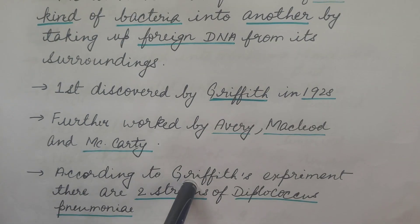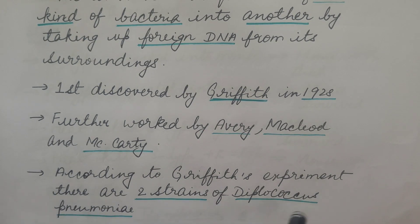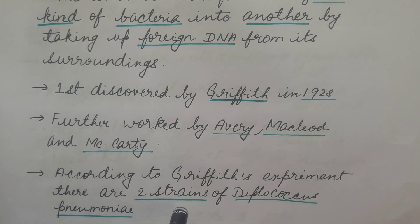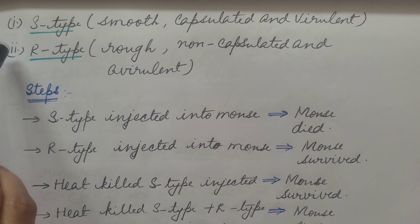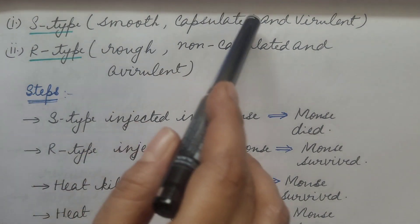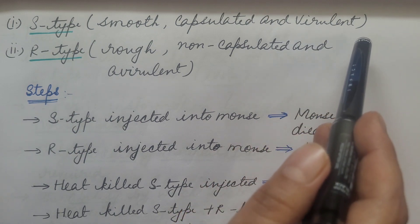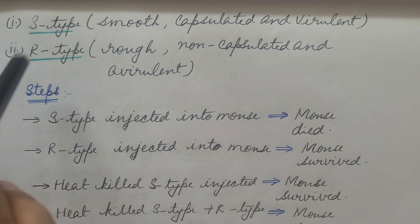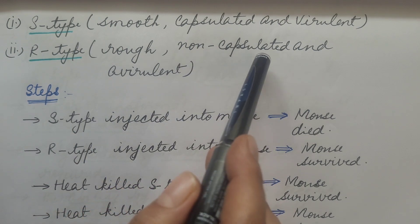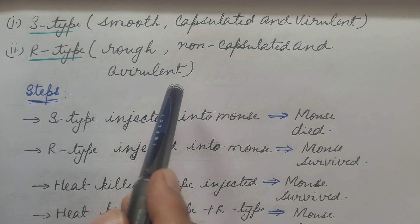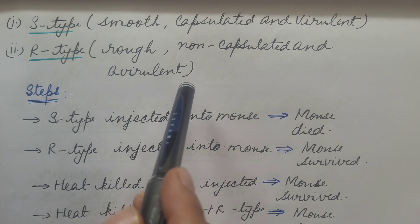According to Griffith's experiment, there are two strains of Diplococcus pneumoniae. First is S-type, which is smooth because it is capsulated and it is virulent — that means it causes disease. Second is R-type, which is rough because it is non-capsulated and it is avirulent — that means it does not cause disease.